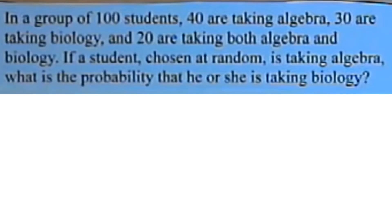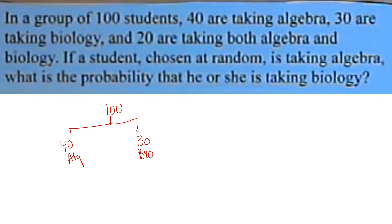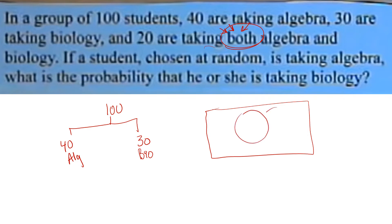For complicated questions, it is good to make a Venn diagram, a table, or a tree. In a group of 100 students, 40 are taking algebra, 30 are taking biology, and 20 are taking both algebra and biology. When the word 'both' appears, the most appropriate approach is to make a Venn diagram.